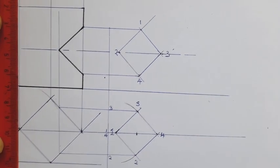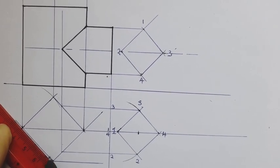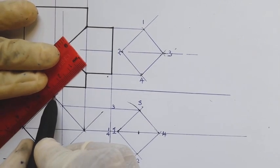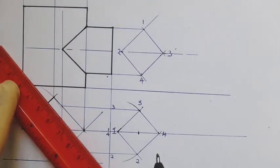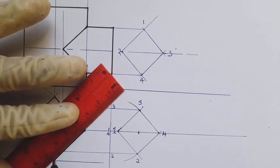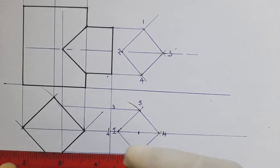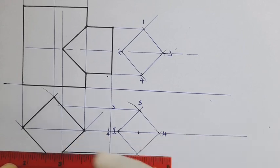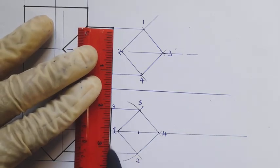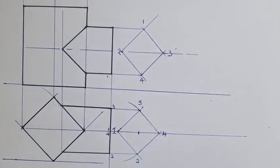We can also join the corresponding points to complete the plan, joining what we shall see as the plan view. All required lines are joined, including the remaining ones, to give us the complete plan. So we now have the complete front elevation showing the line of intersection and the complete plan.